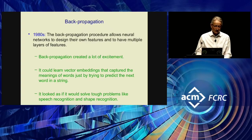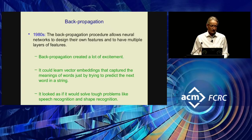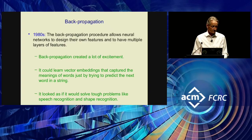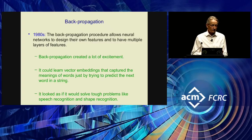In the 1970s and 1980s, many different groups invented the backpropagation algorithm. Backpropagation allows a neural network to learn the feature detectors and to have multiple layers of learned feature detectors. That created a lot of excitement. It allowed neural networks, for example, to convert words into vectors that represented the meanings of words — just by trying to predict the next word. It looked as if it might solve tough problems like speech recognition and shape recognition, and indeed it did do moderately well at speech recognition and very well for some forms like Yann LeCun's networks that read handwriting.